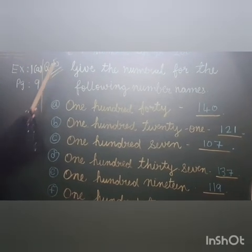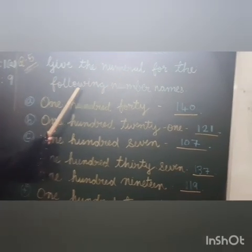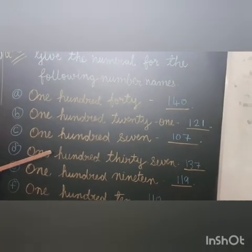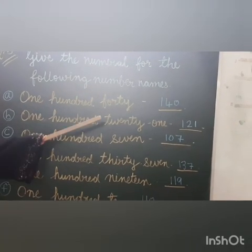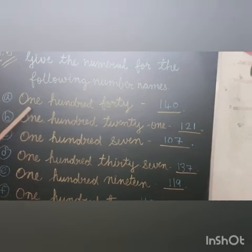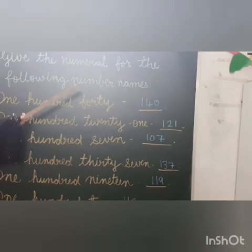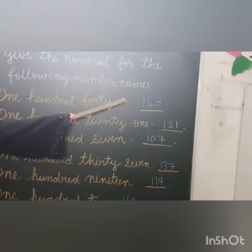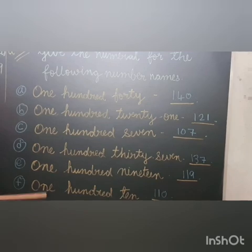Question number 5: Give the numeral for the following number names. Yaani yahan pe hume number names diye, usko hume number mein likhna hai. Part A: One hundred forty. We write 140. Rest of the examples are here.